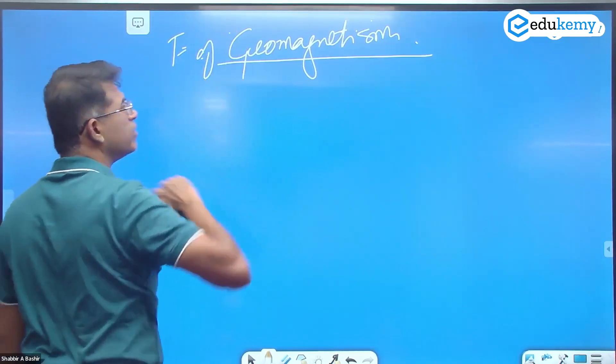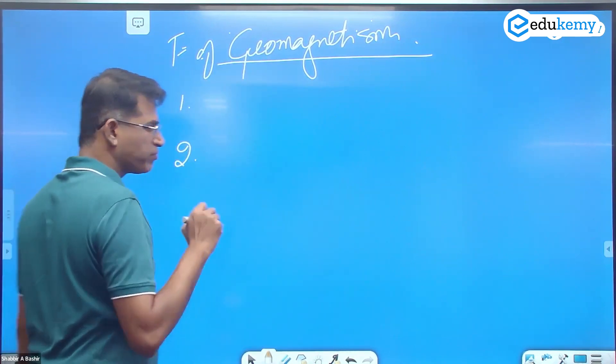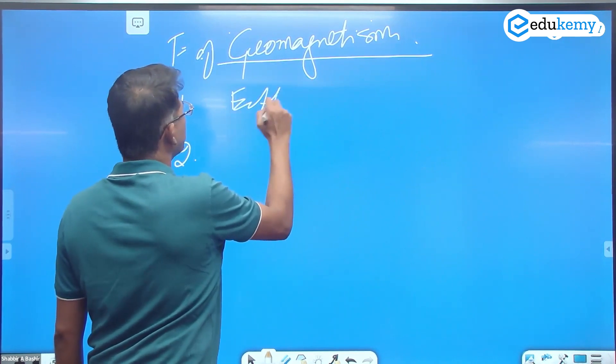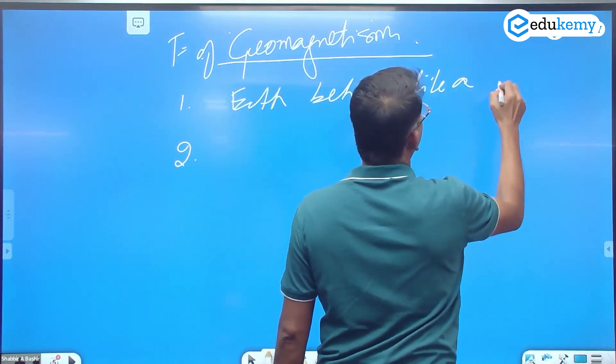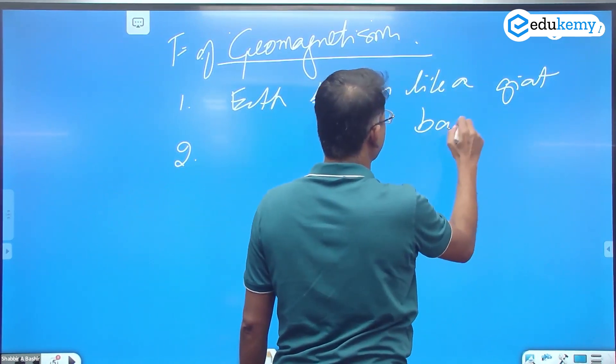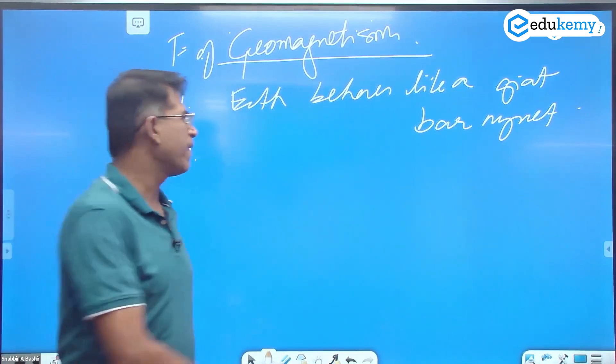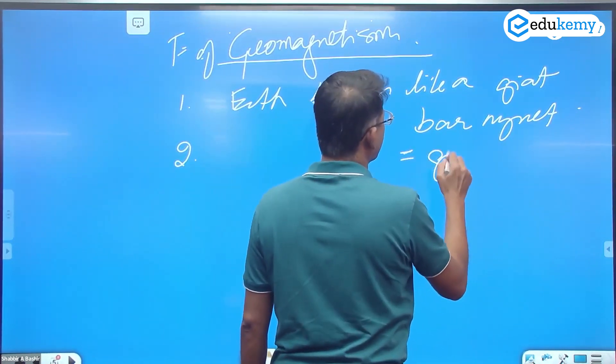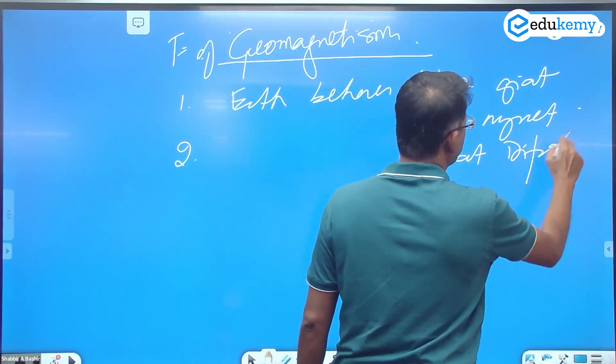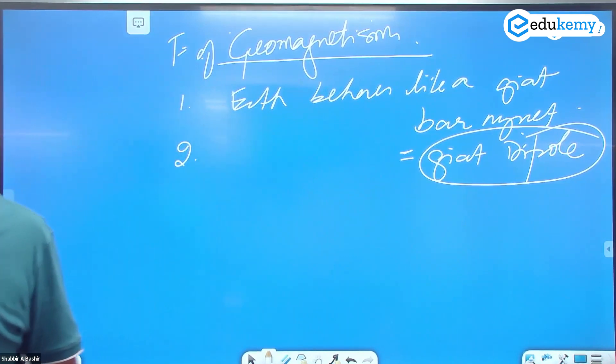Let me quickly cover the fundamentals of geomagnetism in four points. The first point is that Earth behaves like a giant bar magnet. Earth behaves like a giant dipole.